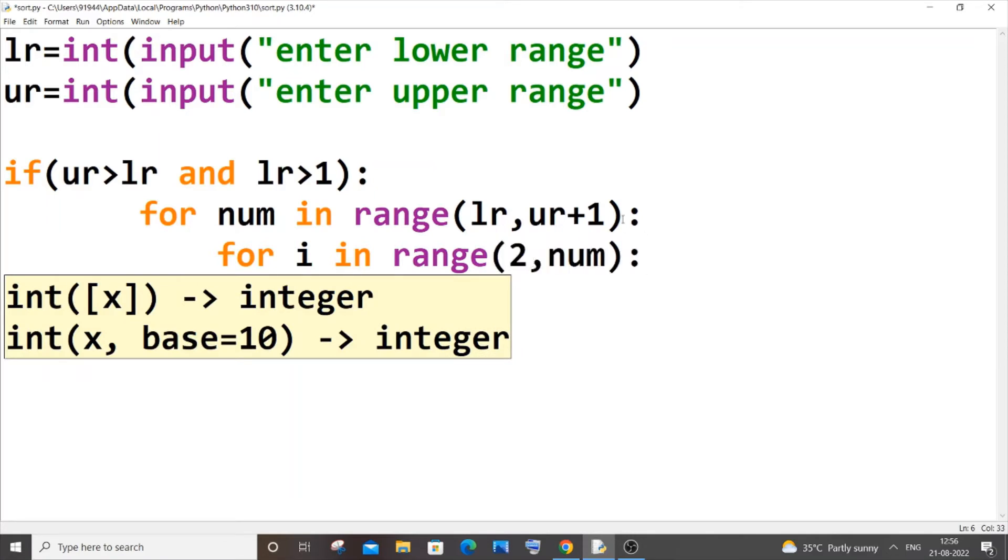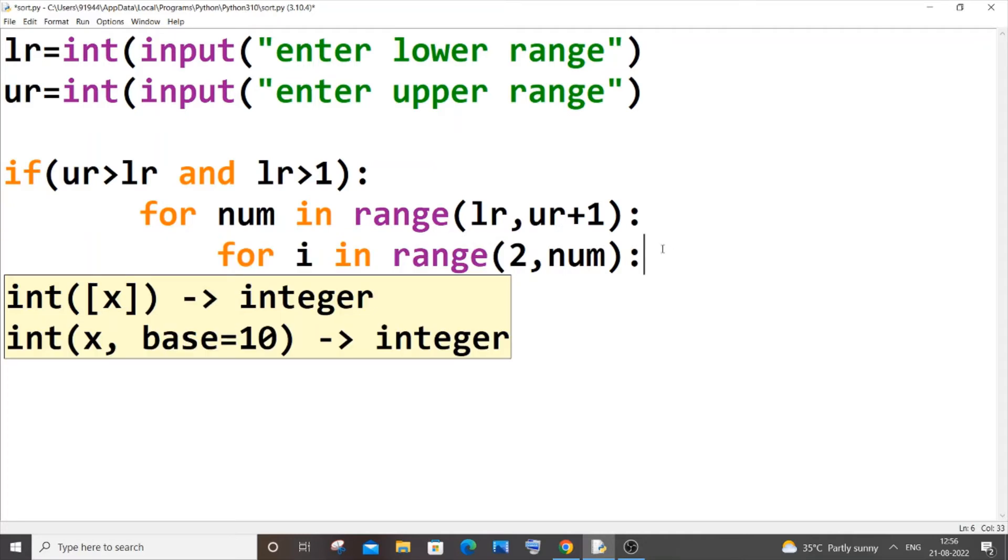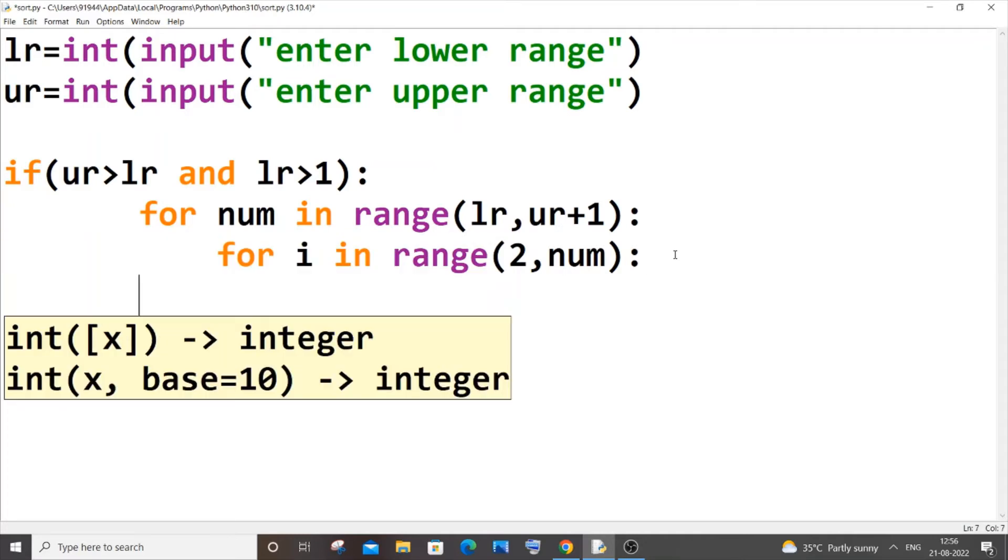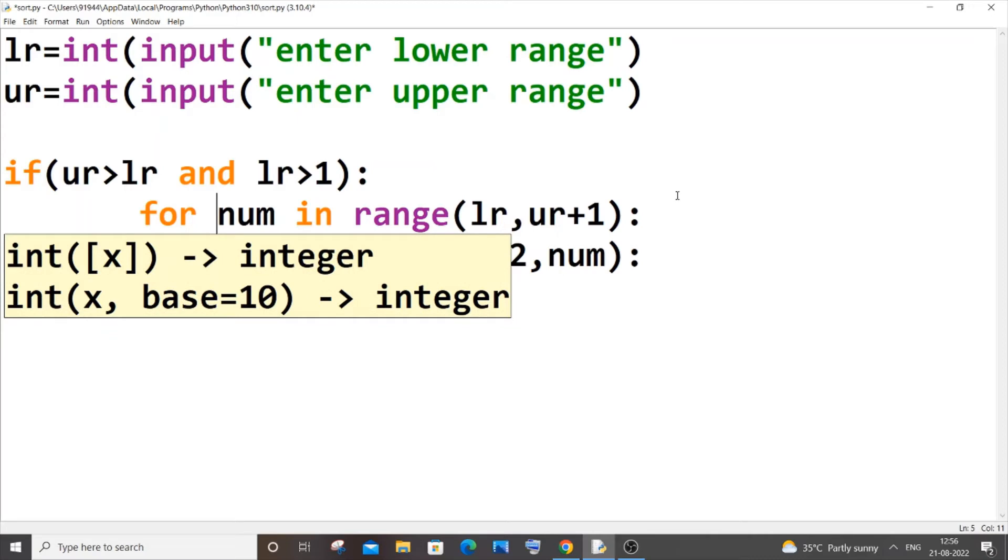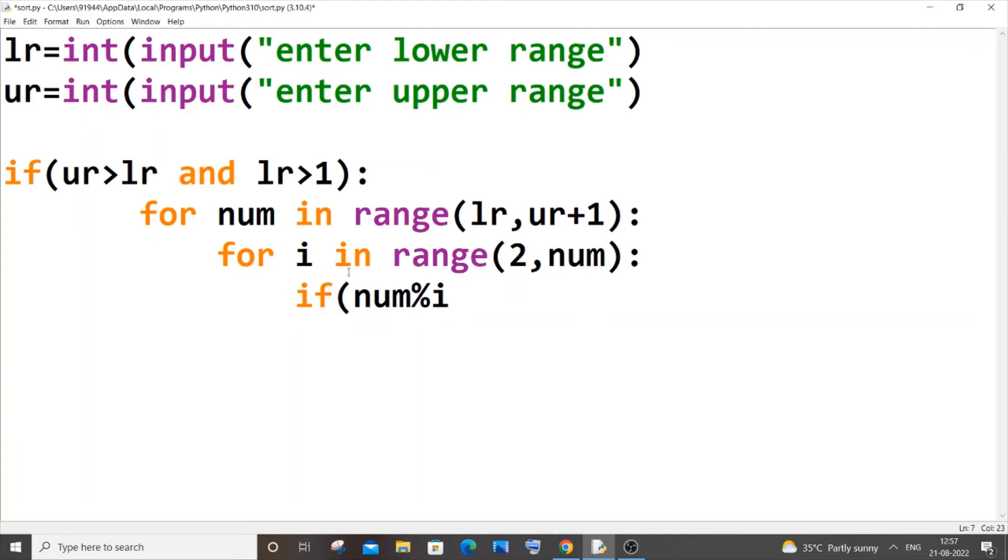Let me just now type the entire code and later I will show you a demo how this basically works. In the next line we will be having an if statement. If this number, this particular number that is iterating from lower to upper range, modulus this particular i which iterates from 2 to this number, equals 0, which means that the number is divisible by some value lesser than that, that means it isn't a prime number. So for that we will just be breaking this particular inner for loop. It's going to be just break.